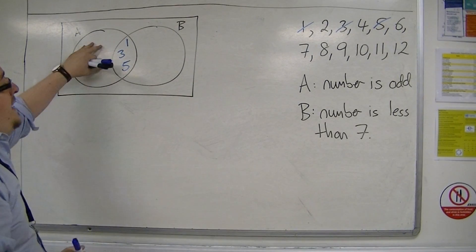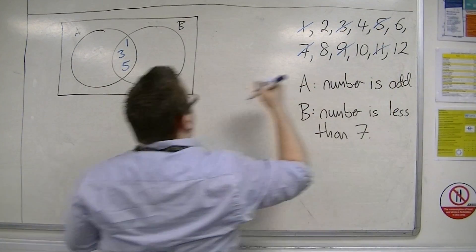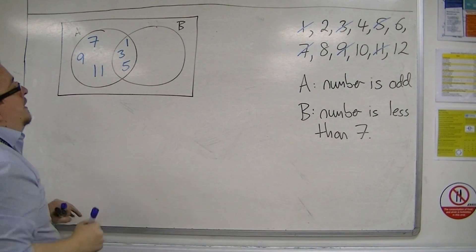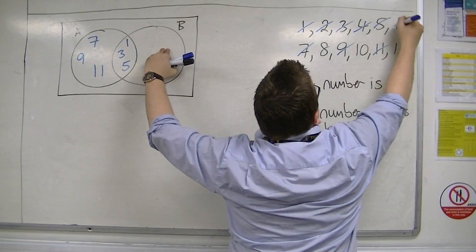Now the remaining numbers that are odd are 7, 9, and 11. And the remaining numbers that are less than 7 are 2, 4, and 6.